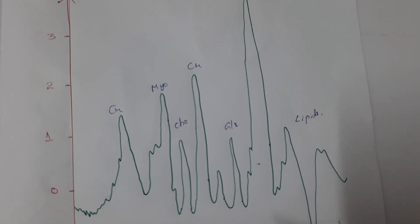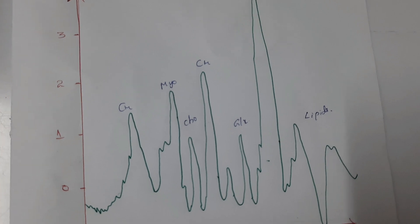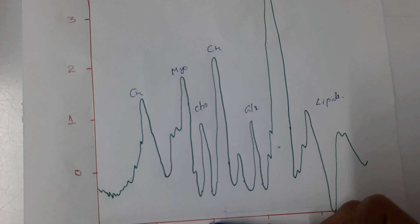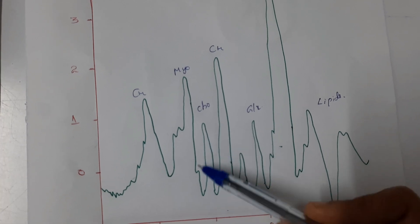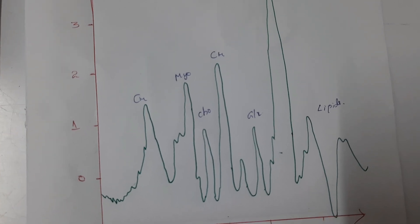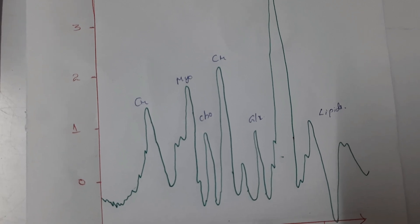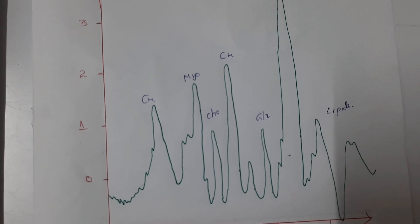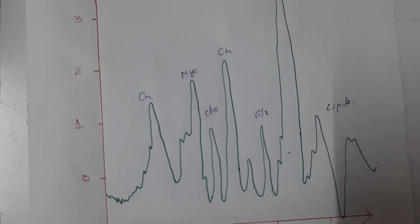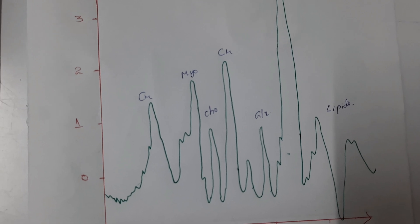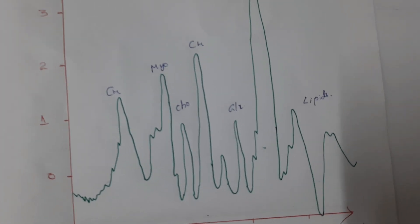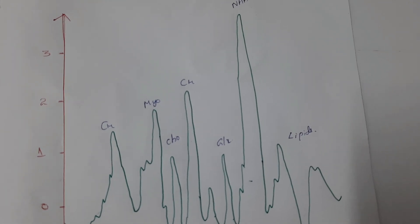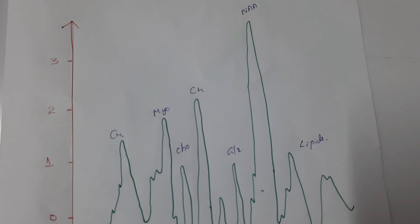The next metabolite is choline. This peak is assigned at 3.22 ppm and it represents the sum of choline and choline-containing compounds. Elevated choline levels can be seen in conditions such as neoplasm, demyelination, inflammation, and gliosis.